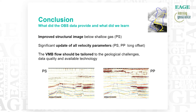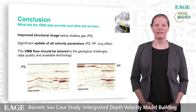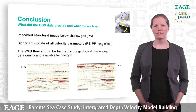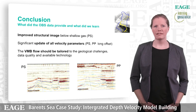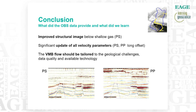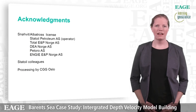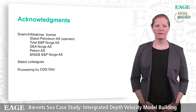As a conclusion, we see that we have an improved structural image below the shallow gas using the PS data. In addition we have updated all the velocity parameters using in particular the PS and also the PP long offsets to achieve that. What we will highlight is that the velocity model building flow should be tailored to the geological challenges, the data quality and the available technology. I would like to thank you for following this e-lecture and acknowledge the Snøvit Albatross License, my Statoil colleagues, and also the CGG Oslo Center for processing the data.